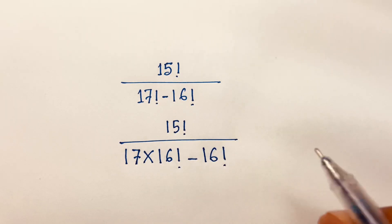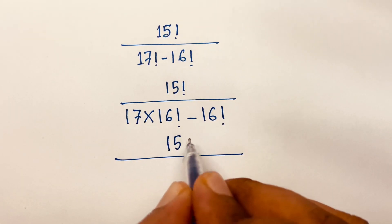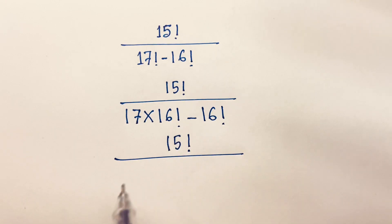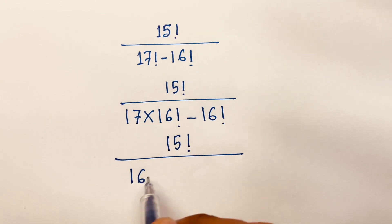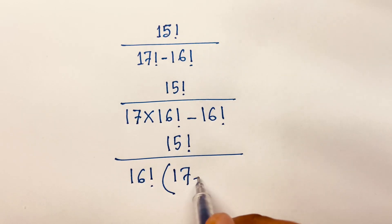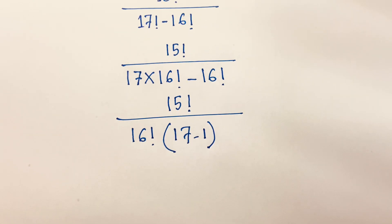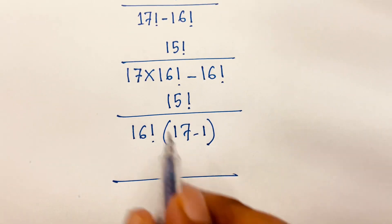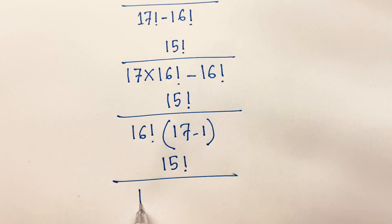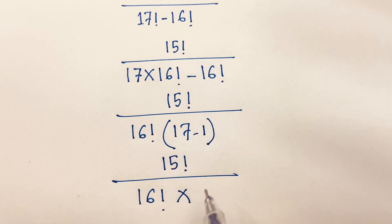Then I can say it will be 15 factorial over, and here 16 factorial is common — so factoring out 16 factorial from the denominator, this divided gives 17 minus 1. Then I can say here is 15 factorial over 16 factorial times (17 minus 1), which equals 16.